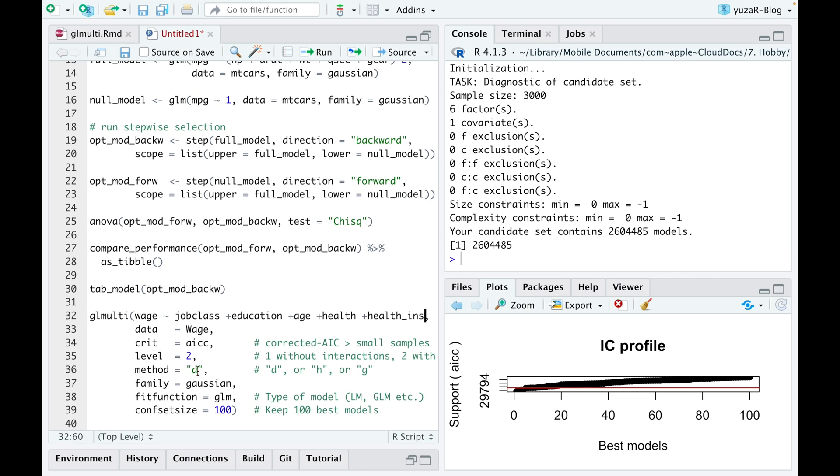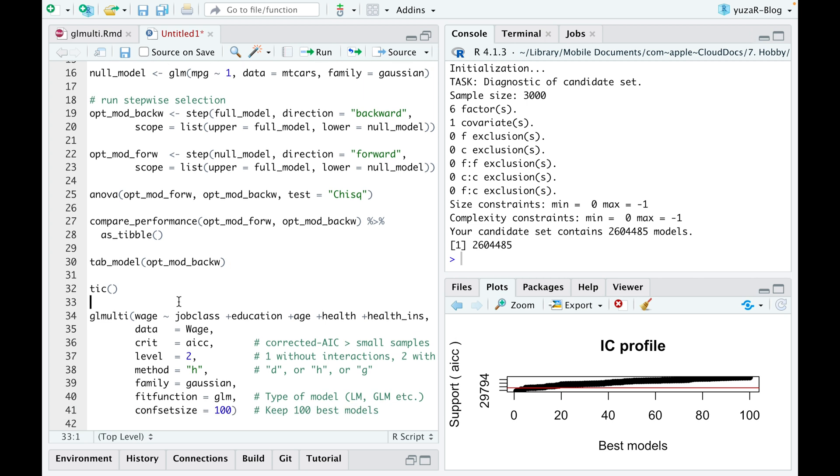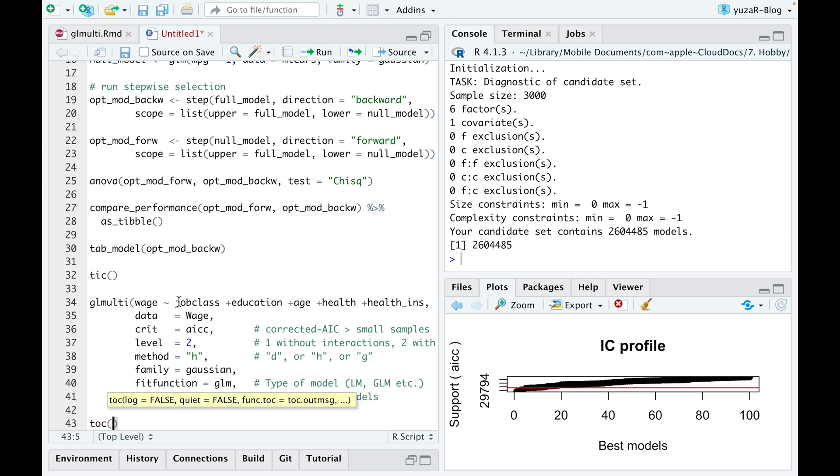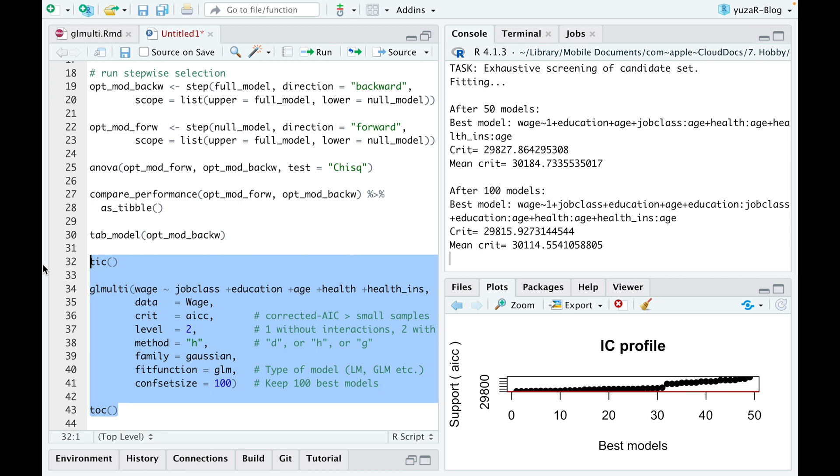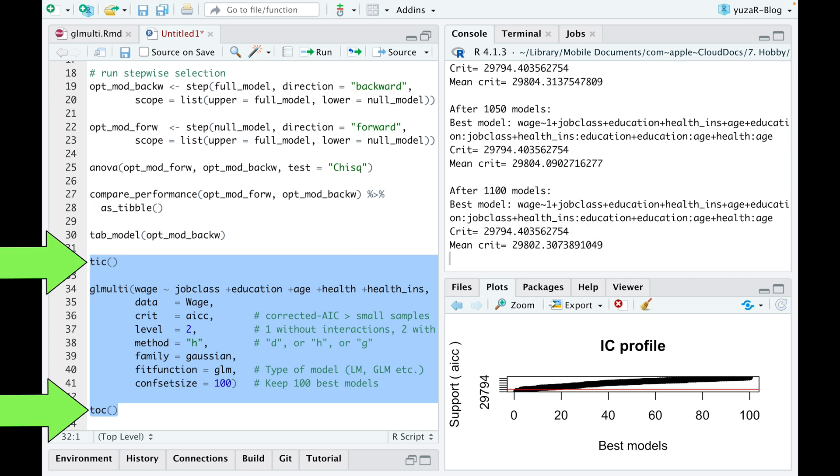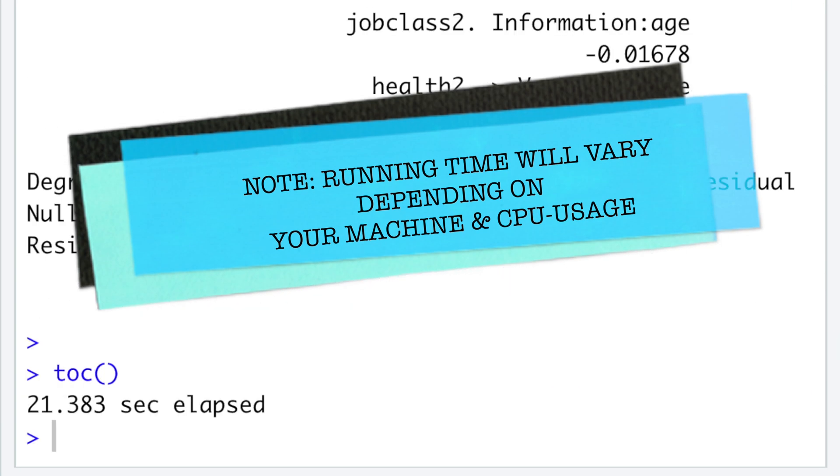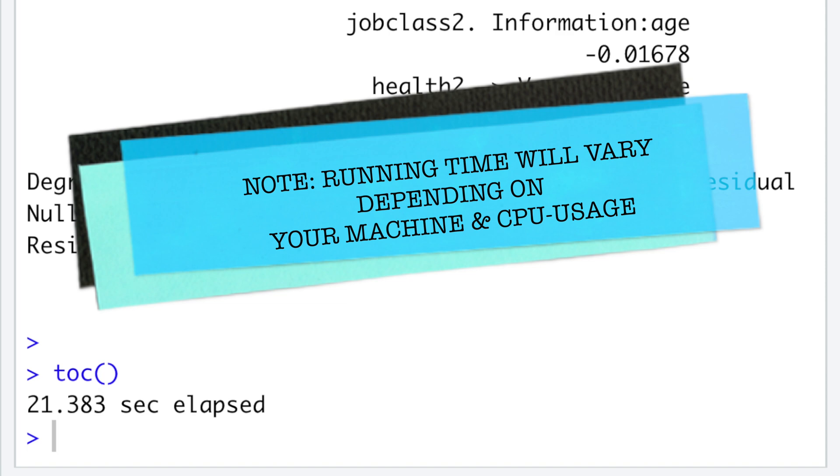So, now let's run the exhaustive algorithm and see how much time it takes to compute 1921 regressions and to find the best model for our five predictors with interactions. Tick and talk functions from TikTok package would record running time for us. Fortunately, the exhaustive method took only 19 seconds. Not bad at all, if you ask me.